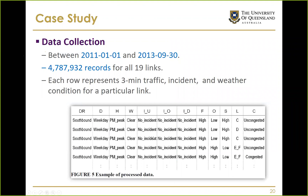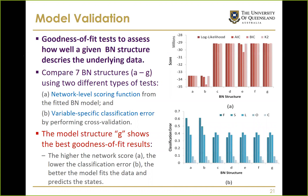The overall data covers two years from 2011 to 2013. Combined, we have five million records for all 19 links. Each row represents a three-minute traffic, incident, and weather condition observation for a particular link — a particular combination of states of these parameters observed over that three-minute interval.